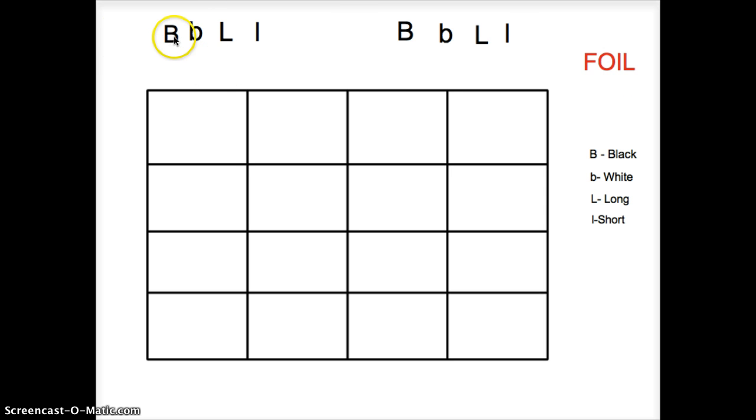When setting up our Punnett square, what we do is we put first, and F is first. So it means out of these two pairs, the first letter in the B's here is the big B, and the first letter over here is the big L. So you set it up like this, first. And then O stands for outside, so you pick the outside letter over here, and then you pick the outside letter over here, since it's the outside.